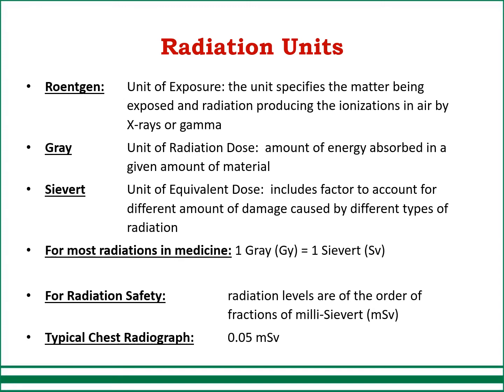Now let's talk about radiation units. The Roentgen is the unit of exposure — radiation producing ionization in air by X-rays or gamma rays. The Gray is the unit of radiation dose — the amount of energy absorbed in a given amount of material, which we use day in and day out. The Sievert is the unit of equivalent dose and includes a factor to account for the different amounts of damage caused by different types of radiation. For most radiation in medicine, one Gray equals one Sievert. In our department we deal with photons and electrons, whose weighting factor is one, so a dose of one Gray equals one Sievert. For radiation safety, radiation levels are on the order of fractions of a millisievert.